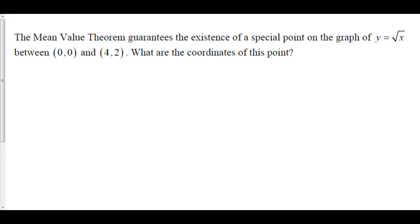The mean value theorem guarantees the existence of a special point on the graph of y equals root x from x equals 0 to x equals 4. What are the coordinates of this point? We know the mean value theorem does guarantee this existence because the function is differentiable everywhere on the interior from 0 to 4, not including the endpoints. The square root of x is differentiable everywhere in that interior, so we can use the mean value theorem.